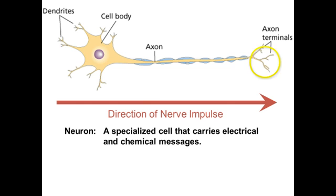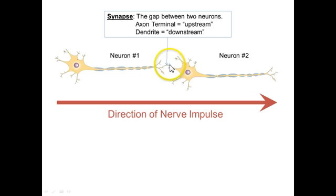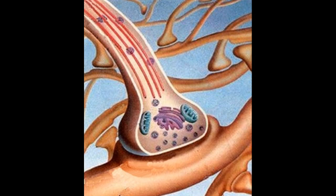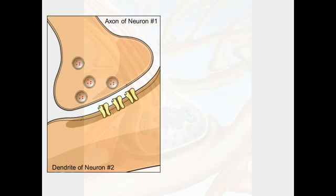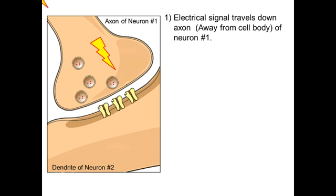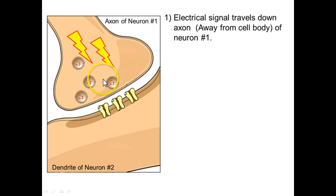Here's our single neuron — the impulse traveling from left to right. Here's what it looks like when we have two connected together, and this area is the synapse. The next thing we need to know are some details of what that gap looks like. Keep in mind the image of the lightning bolt coming down the axon towards the axon terminal. This area is the axon terminal — the end of the axon.